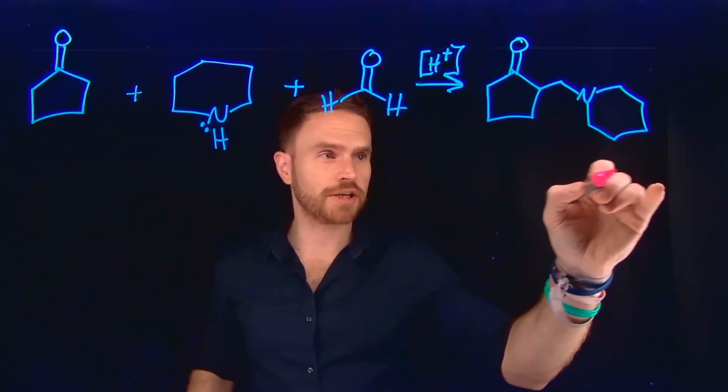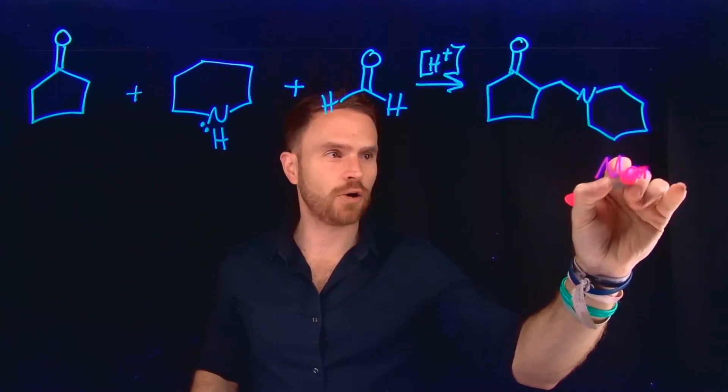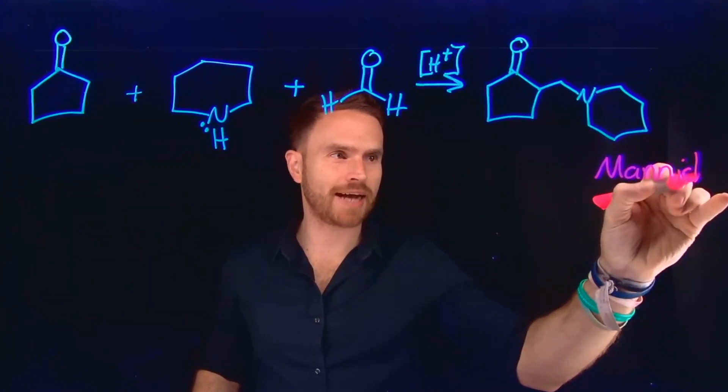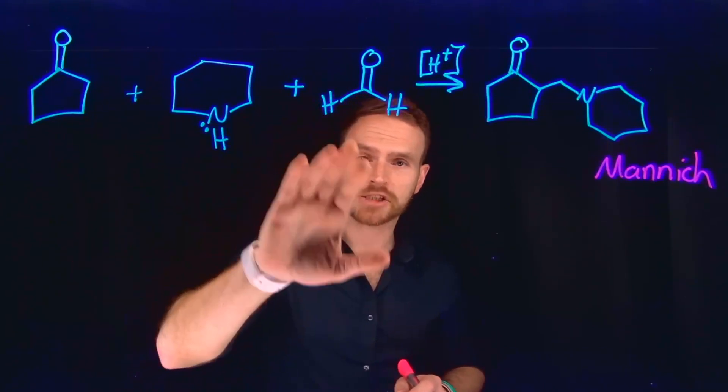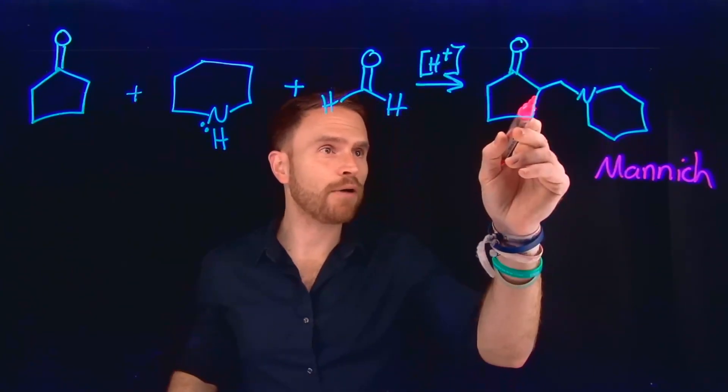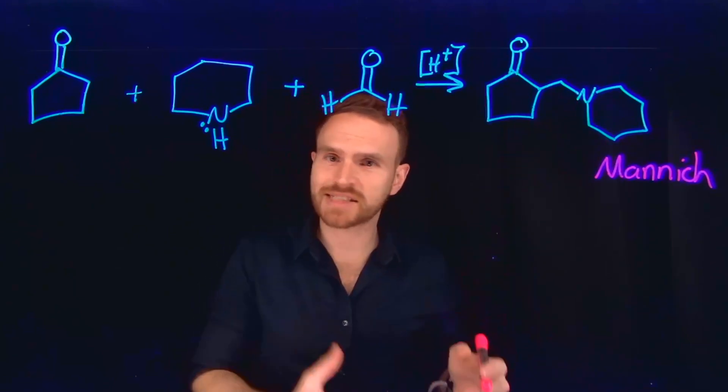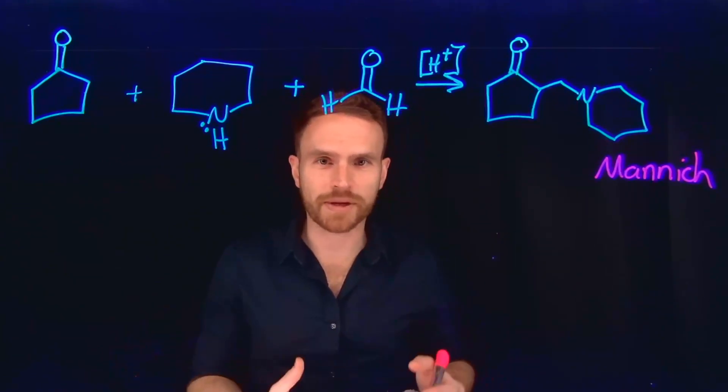This chemical transformation has a very specific name. It is known as a Mannich reaction, M-A-N-N-I-C-H. A Mannich reaction is a three-component reaction that always results in the alpha alkylation of some acidic group adjacent to a carbonyl functional group.